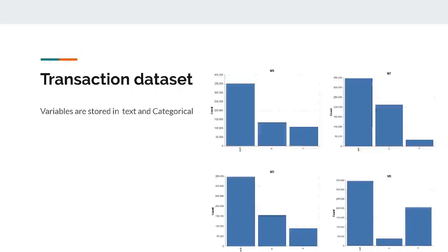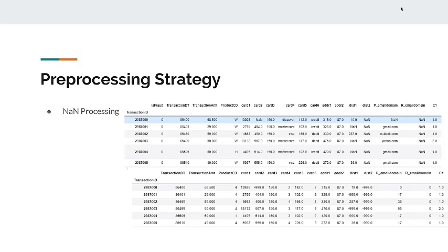For the transaction dataset, we observe that the variables are stored in text format and are also categorical. From the bar chart, we observe that NaN values have the highest weightage as well. In our pre-processing strategy, we use NaN processing — in the given example, the two columns change their NaN values to negative 999.